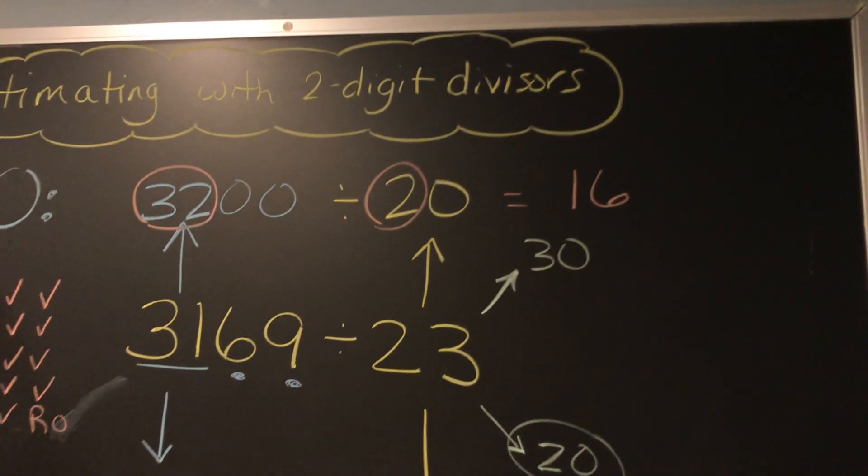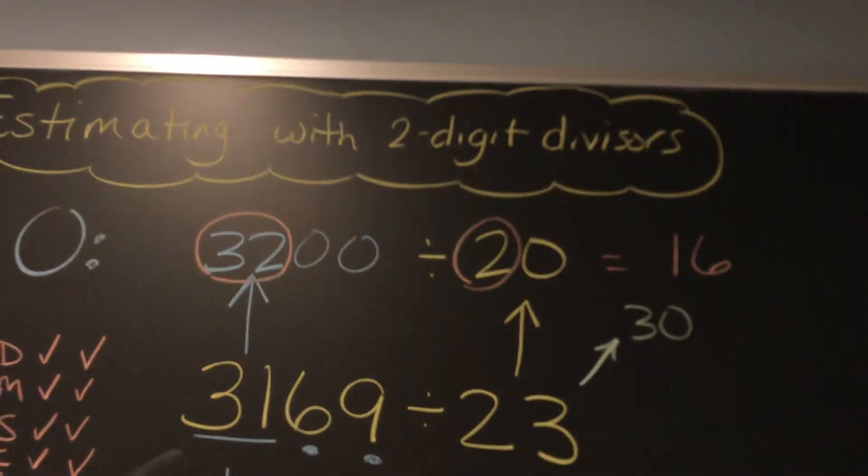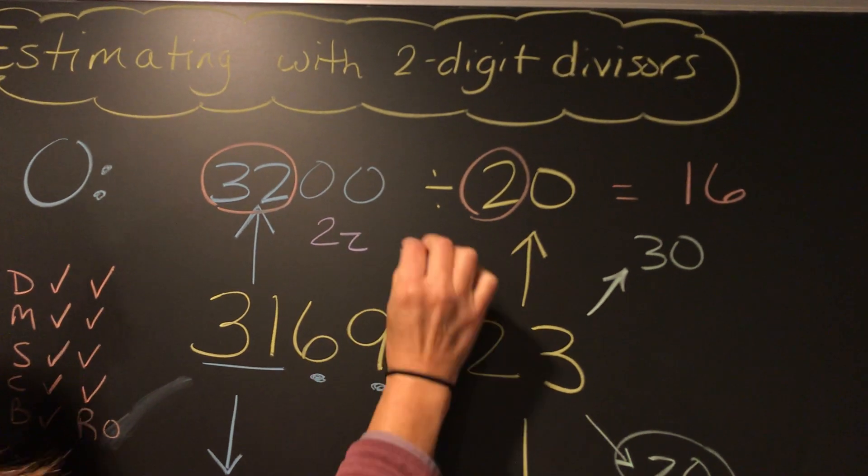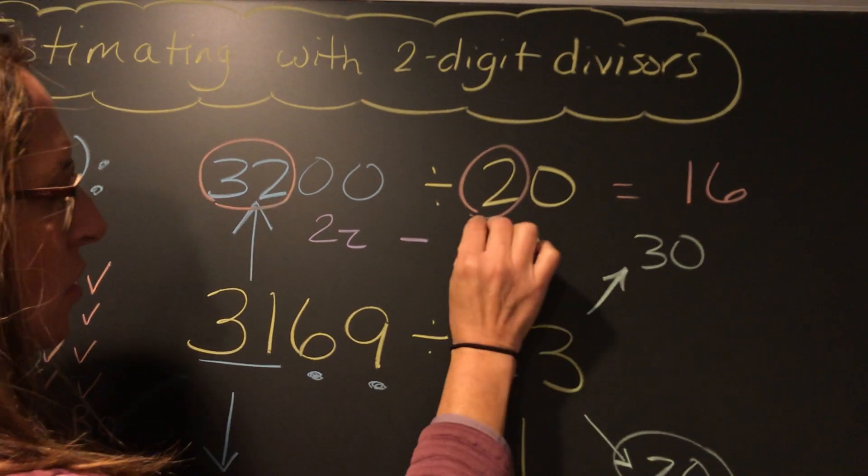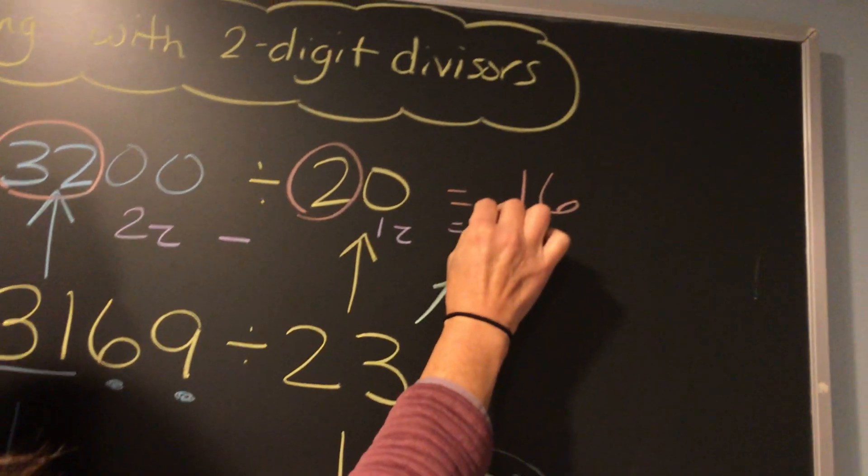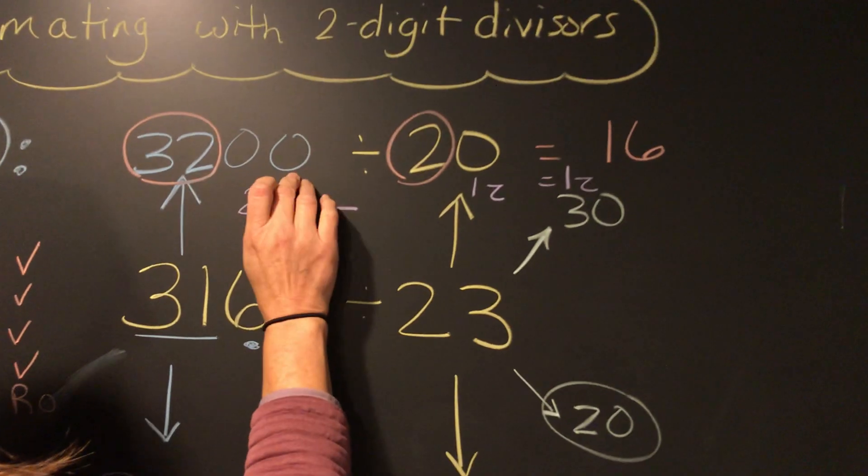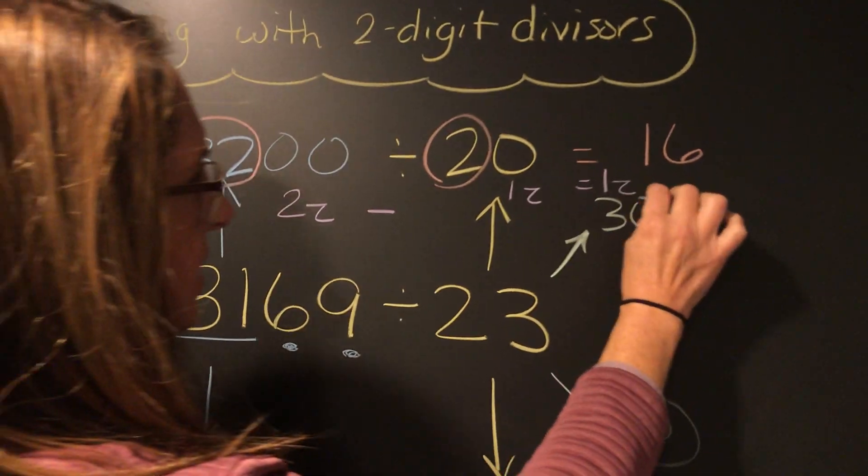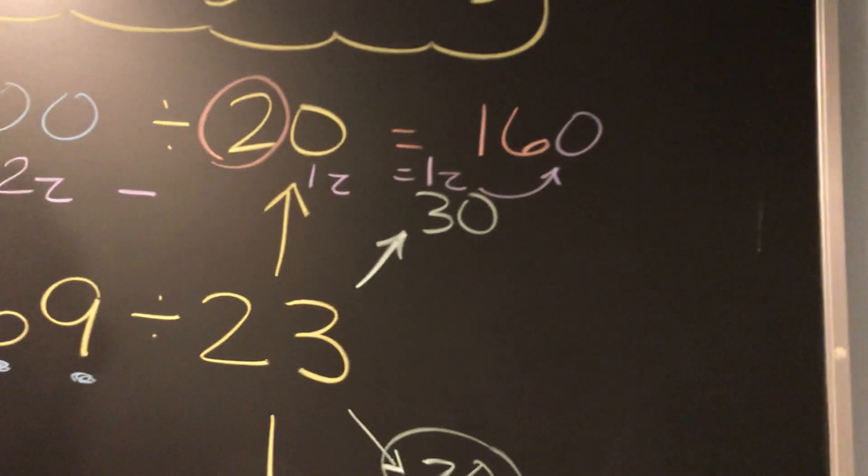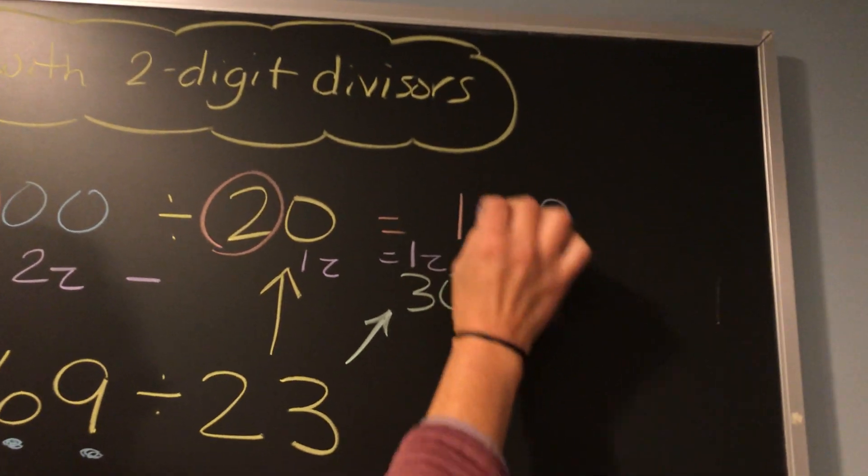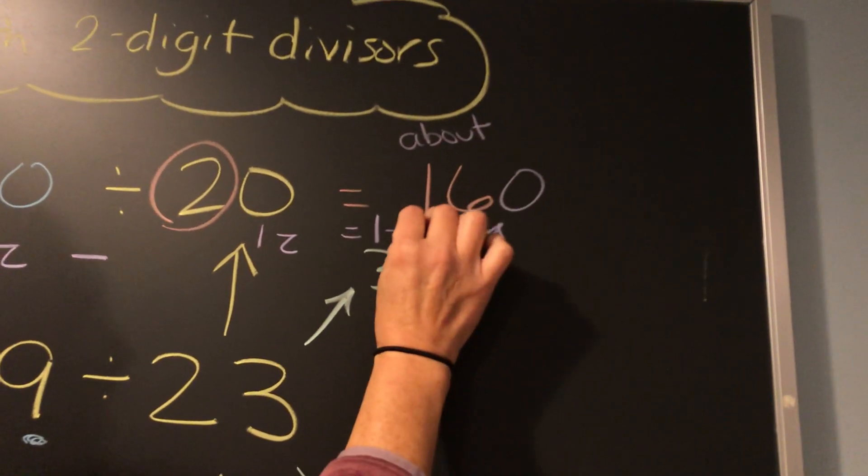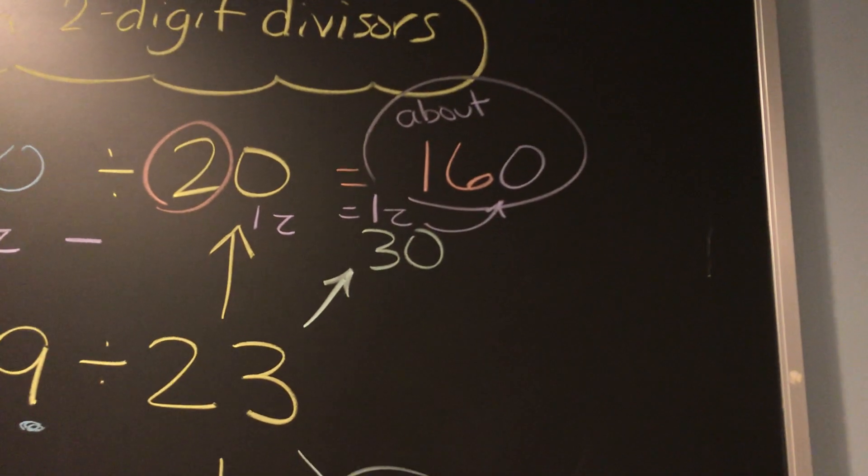Remember, we had to tackle the zeros. When we did 2 z's minus 1 z equals 1 z, we're going to stick that 1 z in our quotient. So our estimate for our overestimate is about 160.